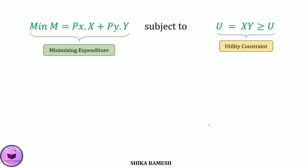The objective function and constraint are written as: minimizing M, that is, minimizing expenditure equal to Px multiplied by x plus Py multiplied by y. We minimize the expenditure subject to the utility constraint: U equals xy, which must be greater than or equal to U-bar.